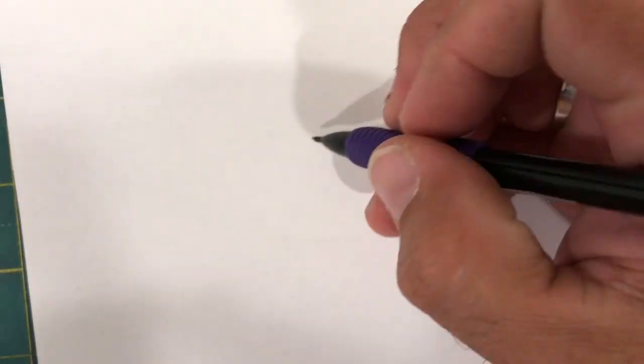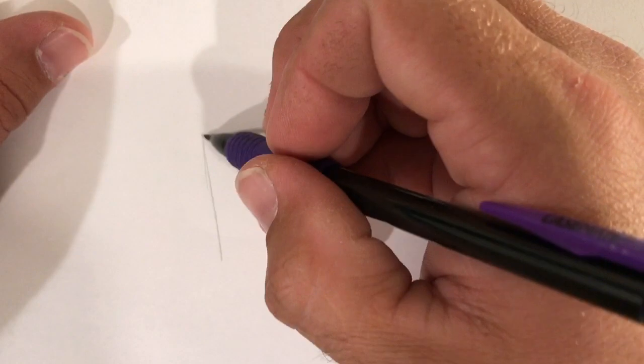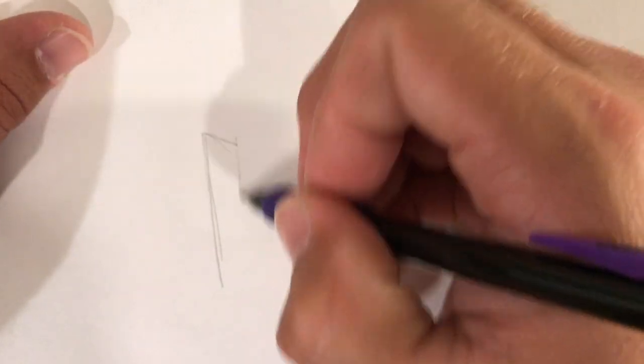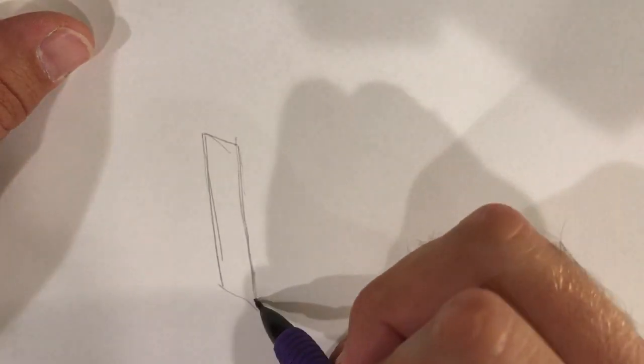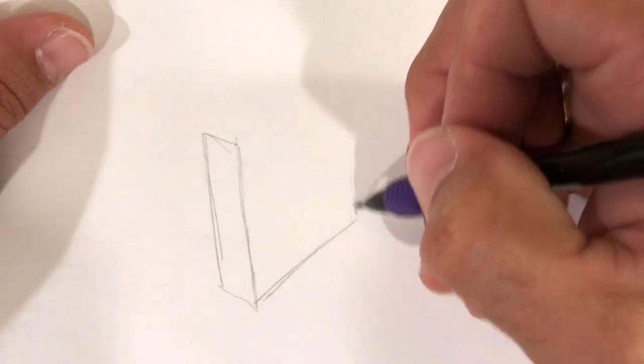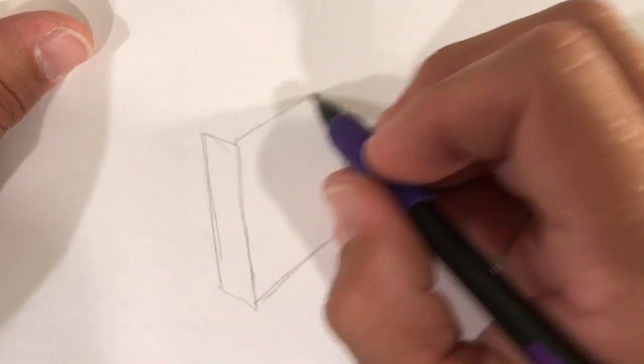Now, we're going to keep going with this. We're going to start off with our cube again. We want to assume, we want the face of this. We want it to be square.